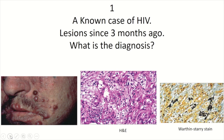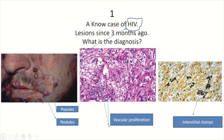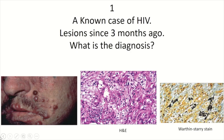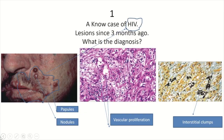Case one: a patient with HIV presenting with lesions since three months ago. What's the diagnosis? As you see here, there are multiple papules and nodules on the face. The biopsy specimen reveals capillary proliferation with protuberant endothelial cells.